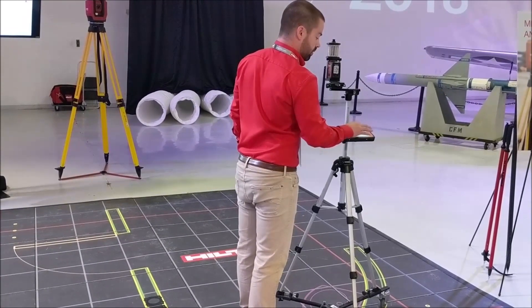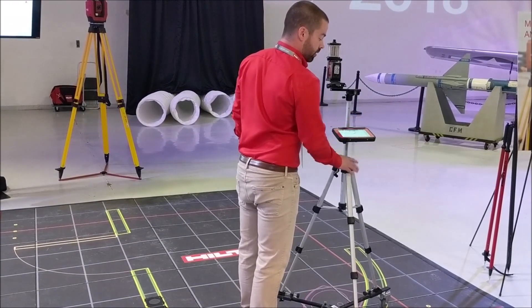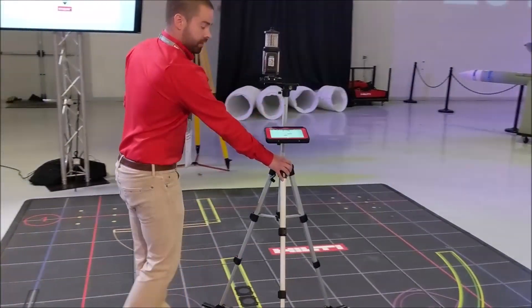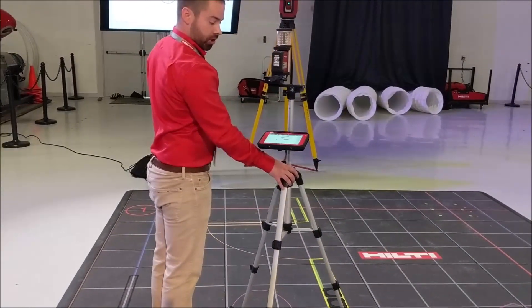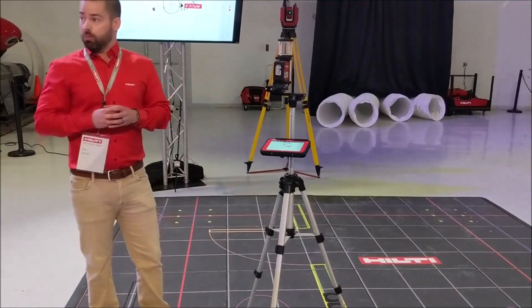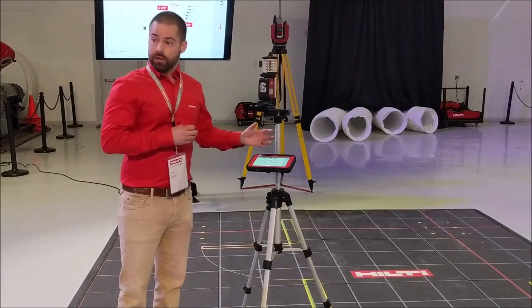I'm going to click like that. I'm going to tell the tool we want to do layout, and the tool is going to automatically recognize as we walk by different elements on the job site when we have the center point of a circle, and then it's going to have us lay that point out.